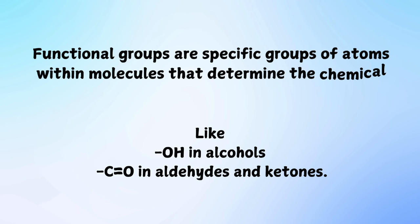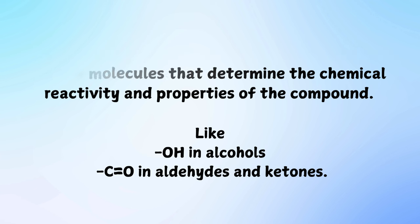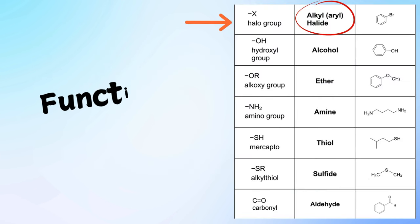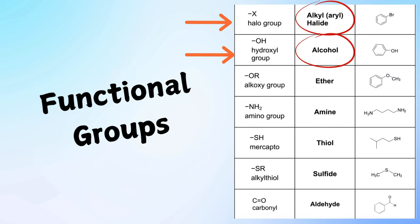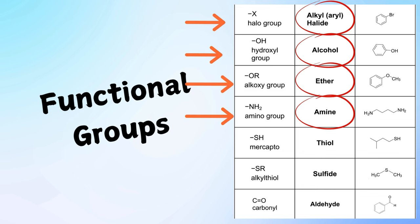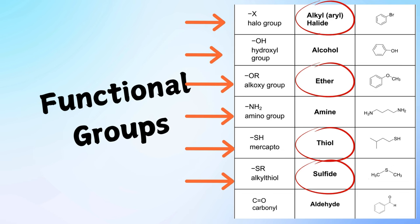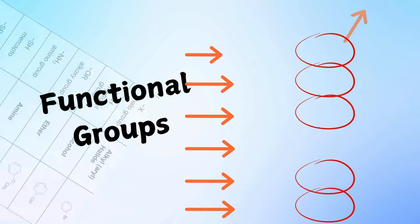Examples of functional groups include: -OH in alcohols, C=O in aldehydes and ketones. Other functional groups include: halo group, hydroxyl group (alcohols), alkoxy group (ethers), amino group (amines), mercaptan or thiol group, alkyl thioether or sulfide group, and carbonyl group (aldehydes and ketones).